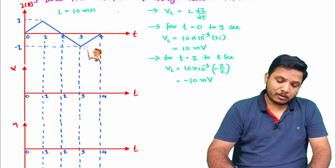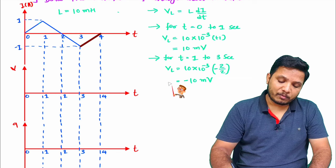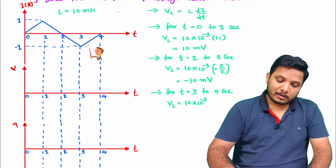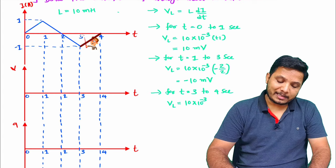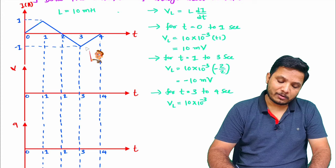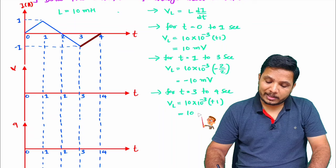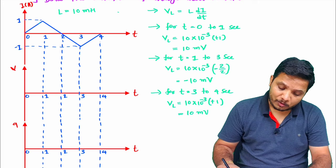During 3 to 4 seconds, voltage across inductance is L = 10 millihenry multiplied by the slope. The slope is positive here — change in y is 1 divided by change in x, which is also 1, giving +1. So VL = +10 millivolts during 3 to 4 seconds.